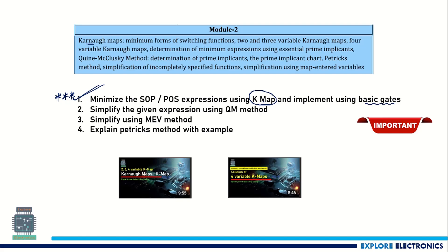K-map problems may involve two, three, or four variables. You can also expect 'simplify using the Quine-McCluskey method' and 'simplify using the McCluskey method.' The theory question here is 'explain Petrick's method with an example,' which has been asked for five marks in previous question papers. These three — K-map problems, Quine-McCluskey, and Petrick's method — are the very important topics for Module 2.